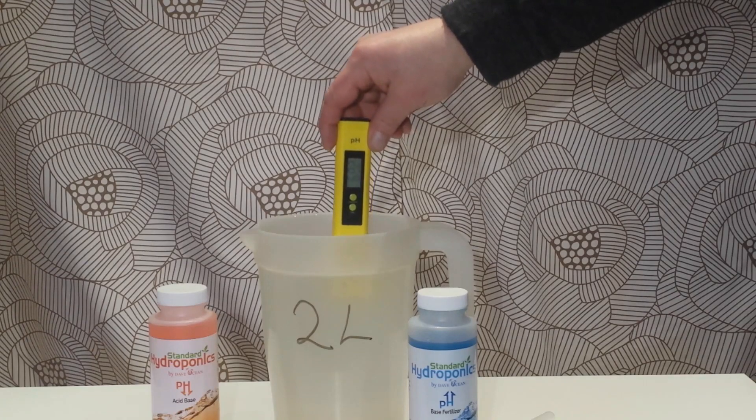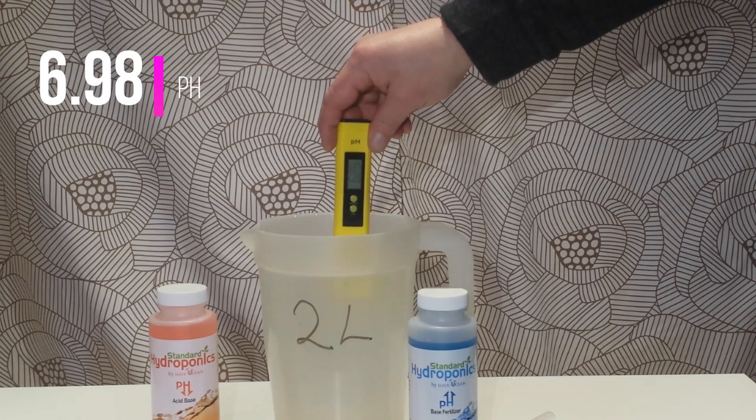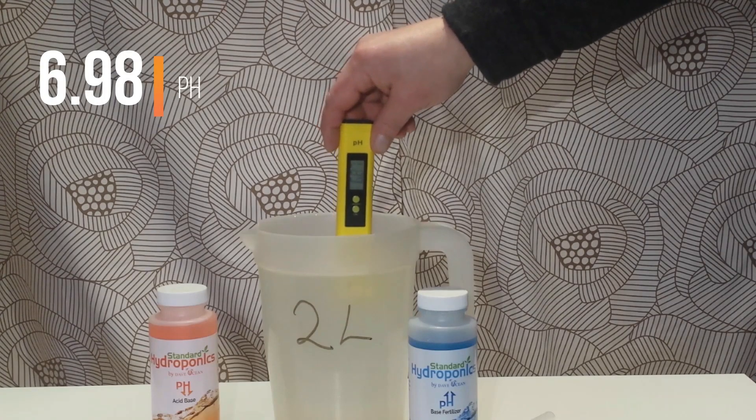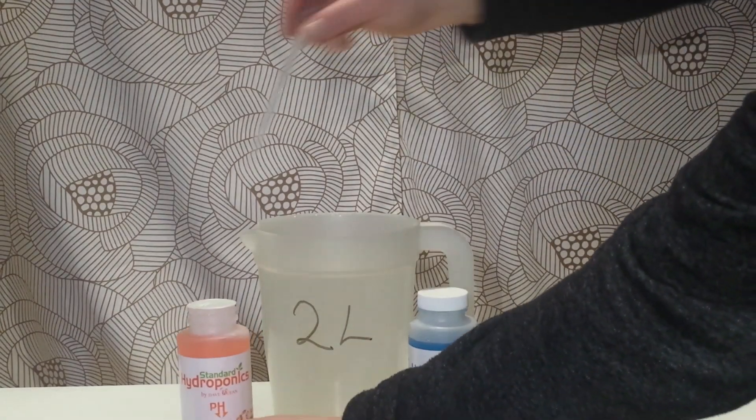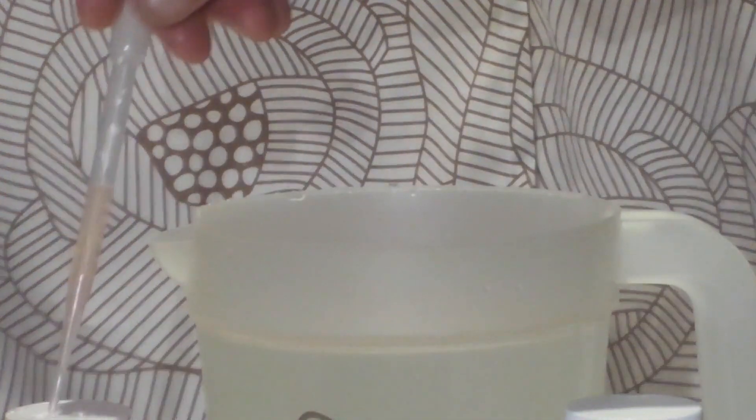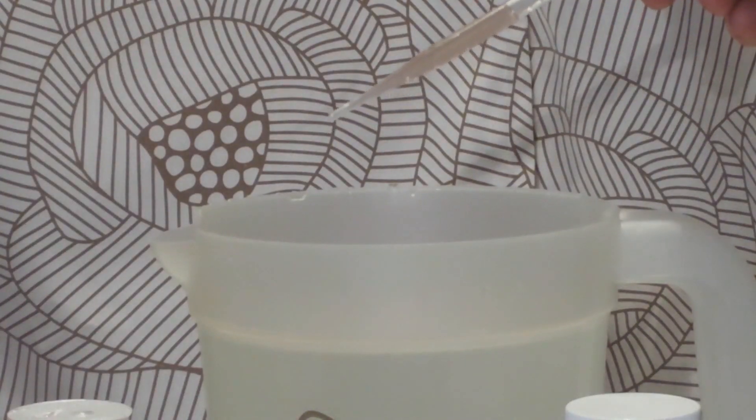Now I've already calibrated my meter. I'm using a two liter water. Now I'm getting a 6.98 pH. I'm going to be using one of our included pipettes that you get with your kit. Now I'm only going to be using one mil right here. That's about equivalent to 20 drops.